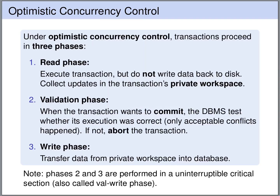Under optimistic concurrency control, transactions proceed in three phases. The first phase is the read phase. The transaction is executed, but the updates of the transaction are not directly written into the database. Instead, the updates are collected in the private workspace of the transaction.